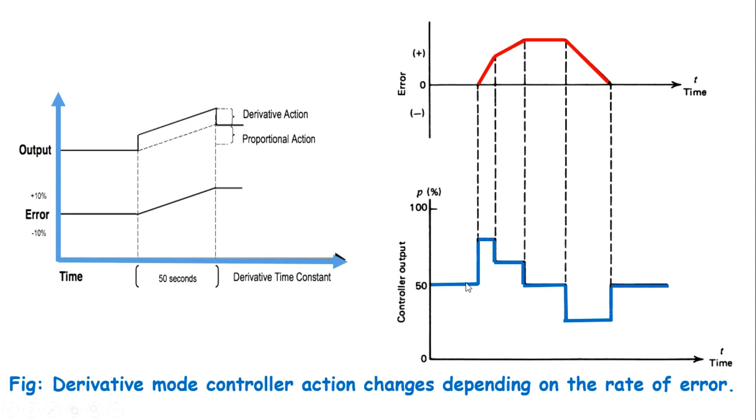When the error changes very rapidly with a positive slope, the output jumps to a large value. And when the error is not changing, the output returns to 50%. Finally, when error is decreasing, that is has a negative slope, the output discontinuously changes to a lower value.